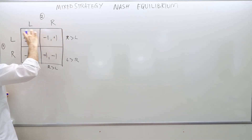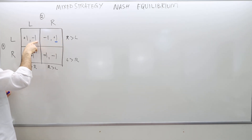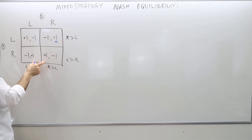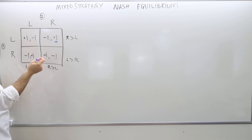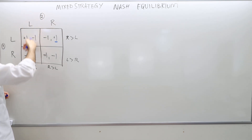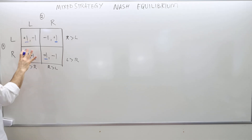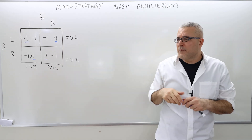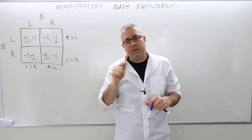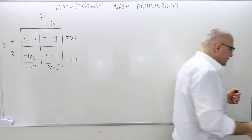If player one chooses left, what strategy would make player two not regretful? It's R, because plus one is higher — so player two would regret choosing left. If player one chooses right, the no-regret strategy for player two is left, because plus one is higher than minus one. Symmetrically, if player two plays left, the best response for player one is left; if player two plays right, it's right for player one. There are no outcomes where both players are simultaneously unregretful — hence there is no Nash equilibrium in pure strategies.